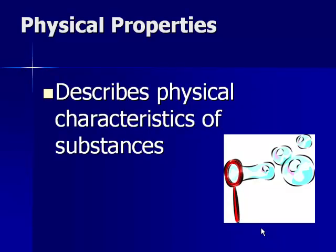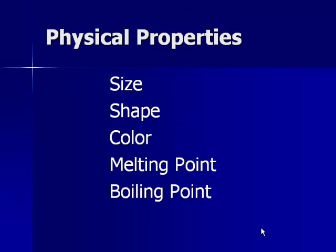A physical property describes the physical characteristics of a substance. Examples of physical properties would be things like size, shape, color, melting point, and boiling point.